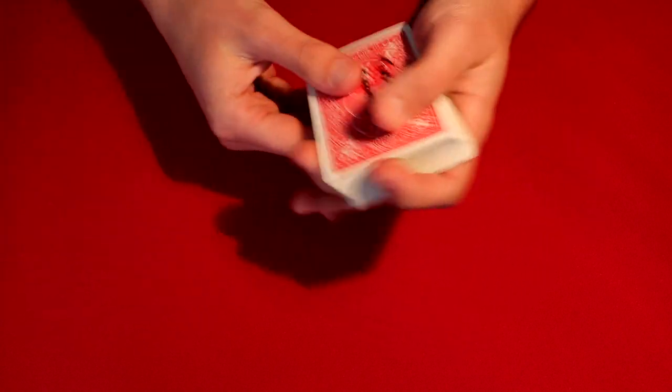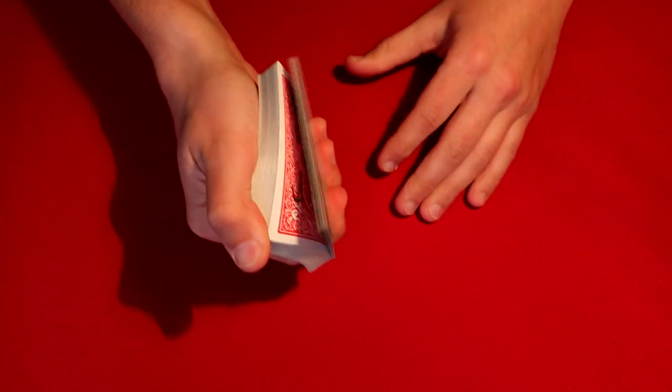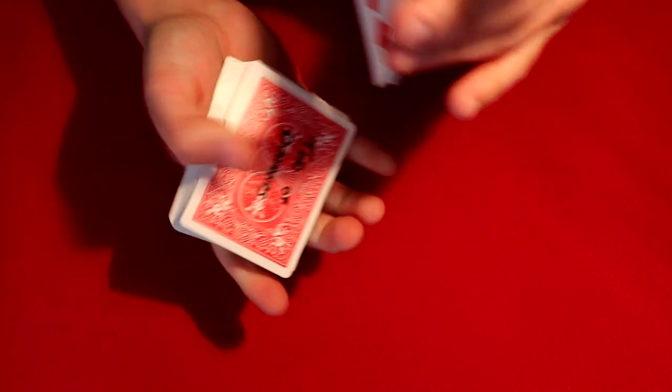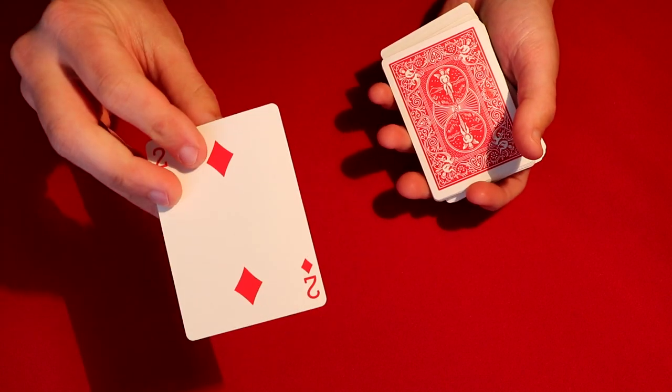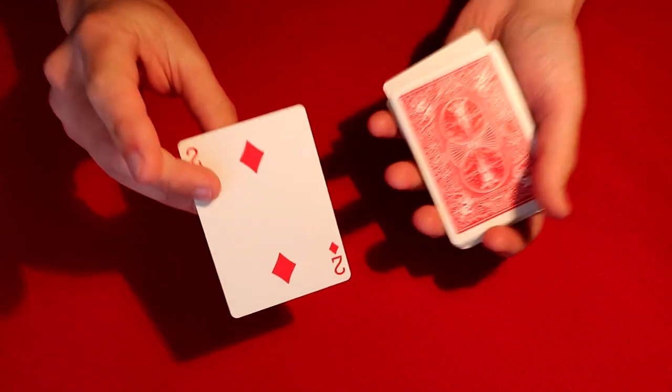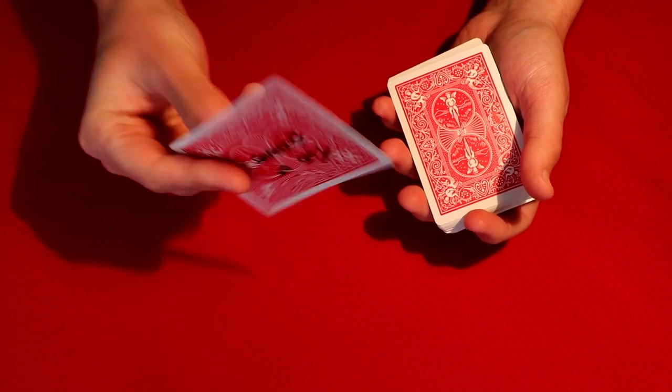Once you have your two cards on top, you're going to want to force one of the duplicates. In this case you can do a slip force—spectator says stop whenever they want, let's say they say stop right here, you give them out the card and they stop exactly at the two. I'll leave a link on the screen for the slip force, but however you want, just get them one of the twos.